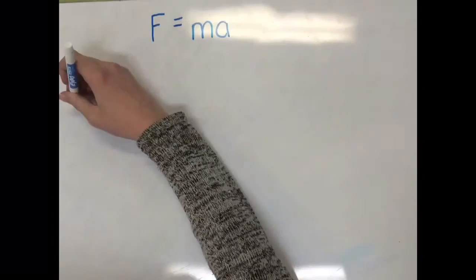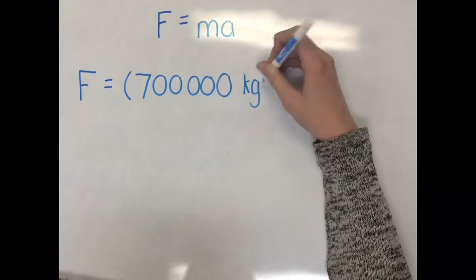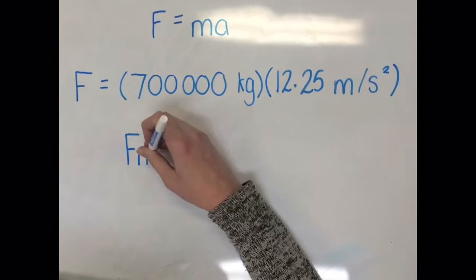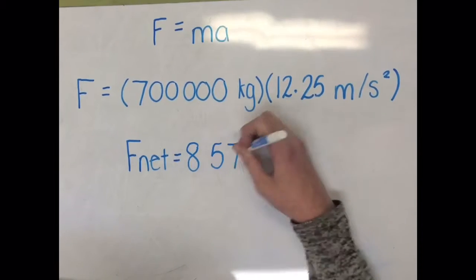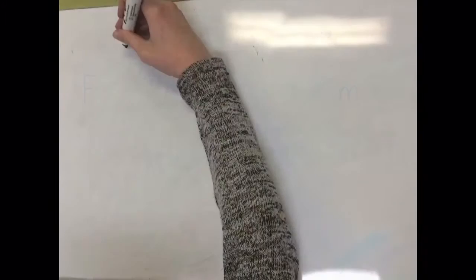Now using Newton's second law of motion and the equation F equals ma, we can use the mass of the train and the acceleration to find the net force. If I multiply 700,000 kilograms by 12.25 meters per second, that gives me a net force of 8,575,000 newtons.